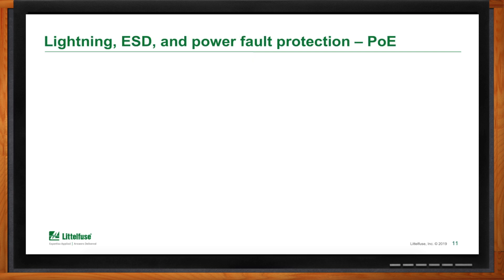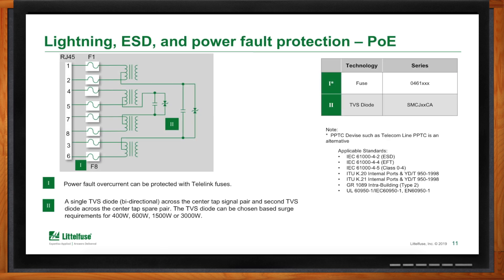For Power over Ethernet, which powers remote devices via the Ethernet cable, TeleLink 461 series fuses can be used for overcurrent protection. For voltage protection, TVS diodes can be used — one across the center-tap signal pair and a second across the center-tap spare pair. The TVS diode can be chosen based on your surge needs for the specific application: 400 watts, 600 watts, 1,500 watts, or 3 kilowatts. The recommended TVS diode is the SMCJ series.